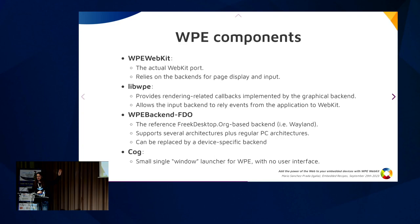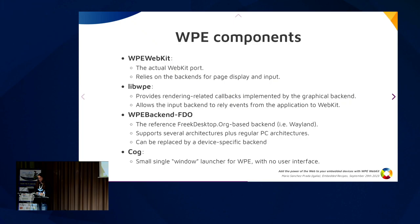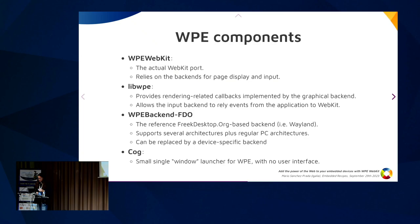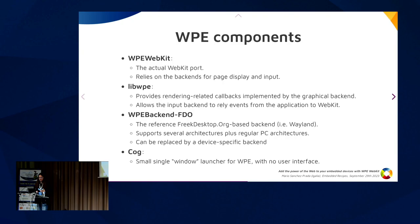There are four components on the WPE website. The first is WPE WebKit - the actual WebKit port. It implements everything needed for Linux-based platforms plus abstraction layers for handling graphics and input, and delegates the display of web content and input handling to the backends. Then you have libwpe - the library providing the glue between the WPE port and the backends. It provides abstractions for rendering-related callbacks and allows input backends to communicate directly with the WPE port, responding to input events like clicks and typing.